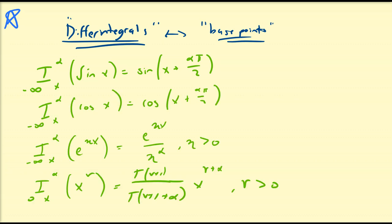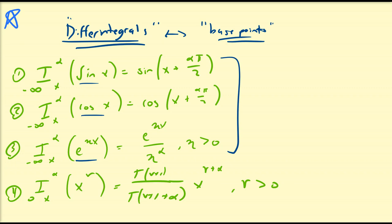I've written down the other three properties we have discussed for the RL fractional integral. Here's a question to think about before we begin the formal discussion: there's a property that sine, cosine, and e to the ax where a is greater than zero each have, that the function x to the nu does not. Take a moment and think about it, and we'll discuss that in this video.